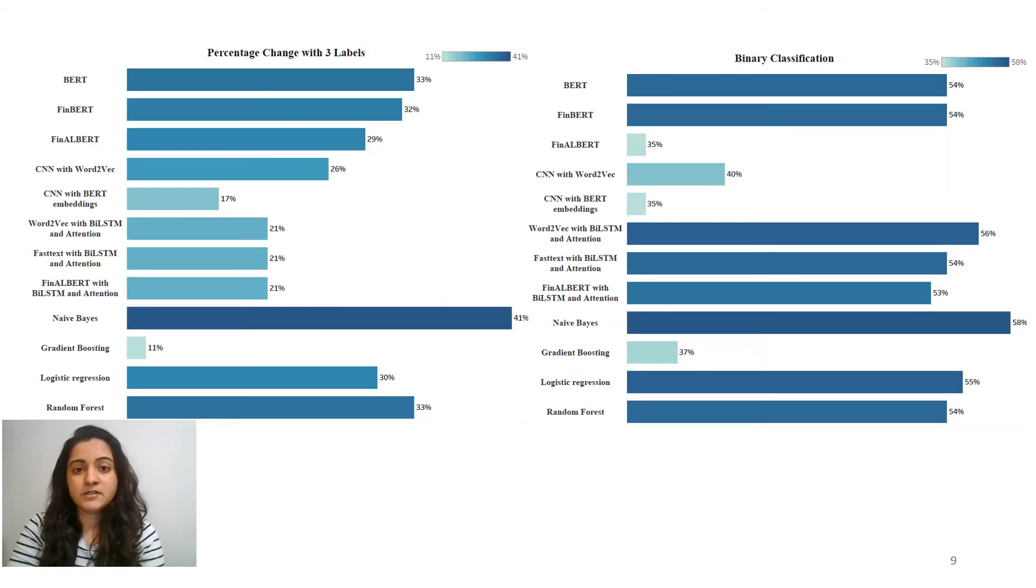Now, on the left-hand side of the screen, we can see the results of percentage change with three labels technique. Here, Naive Bayes model outperforms all other models with F1 score as 41%. While in transformer-based model, the BERT model gives the best result with F1 score as 33%. In neural networks, mostly all models perform equally with F1 score as 21%.